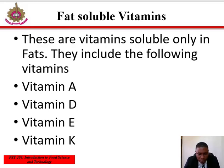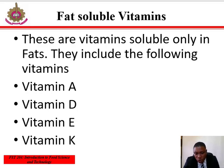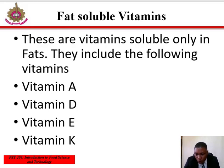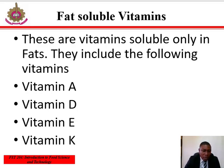Vitamin K is found mainly in green leafy vegetables, egg yolk, liver, and fish oils. It is also essential for synthesis by the liver of several factors necessary for blood clotting and other body functions.